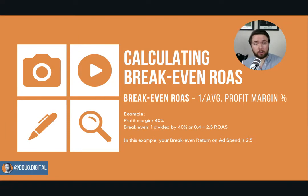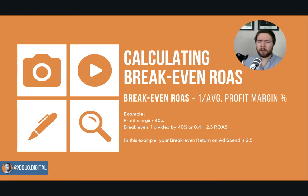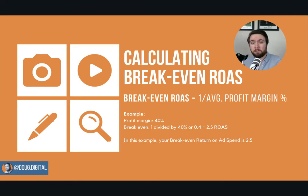So how do I use that? I start by figuring out what my break-even return on ad spend is using this formula: one divided by your average profit margin. Then I like to set an automatic rule that says if after a set period of time — usually about 48 hours — the return on ad spend is less than or equal to this break-even number, kill the ad set. Just get rid of it; it is not making us money. That way, only the ads that are driving profitable sales are the ones being scaled up.